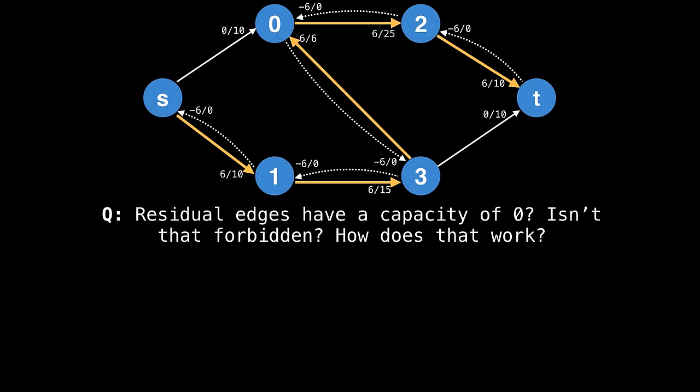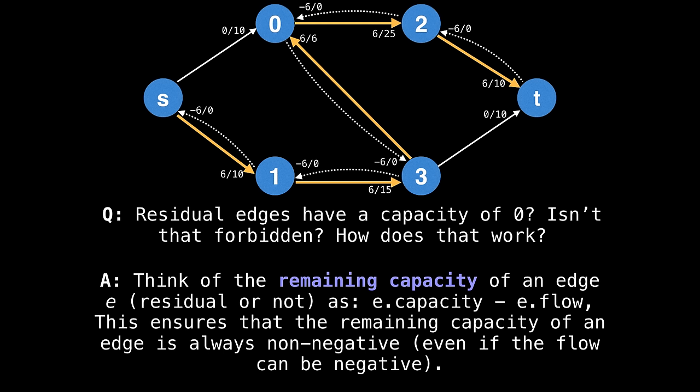So here's a good question you might have at this point, the residual edges shown have a capacity of zero, aren't those forbidden? How does that work? So here's the thing.